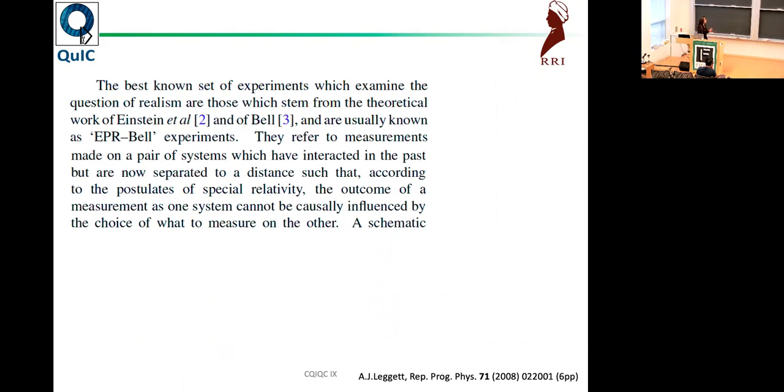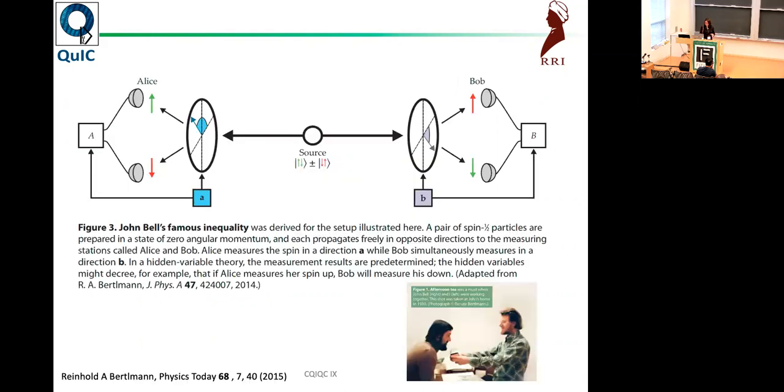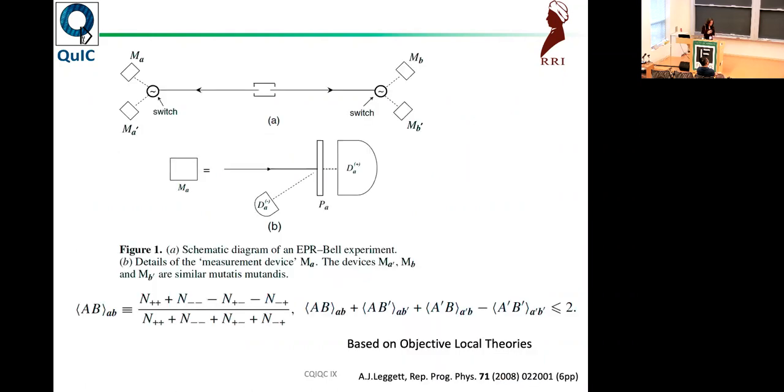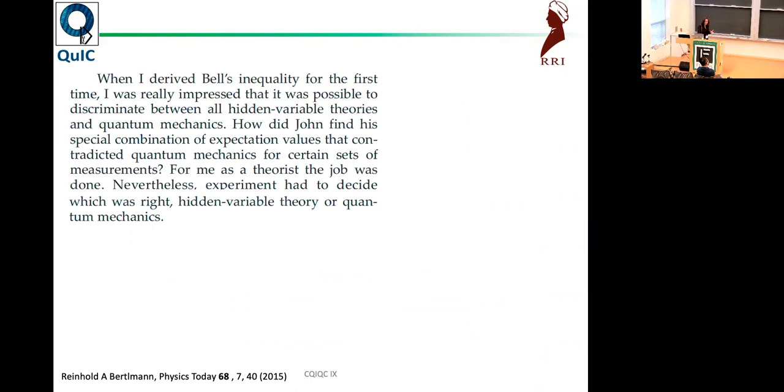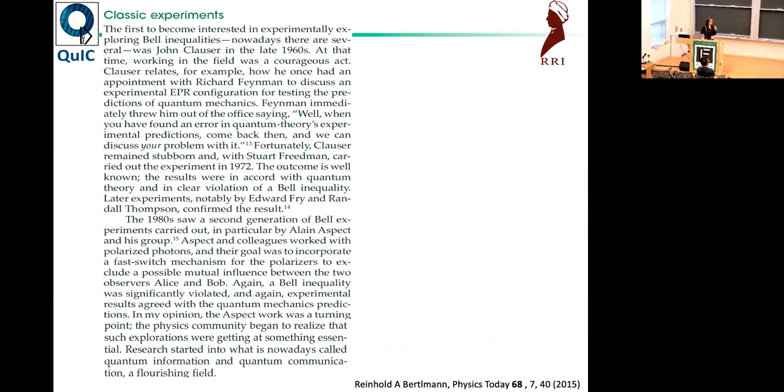This is Reinhold Bertelman with his socks. The best known set of experiments which have tried to examine this question of realism are, of course, these EPR Bell experiments. We have a source. For me, it's a pair of photons, but it could be anything. They are going to these different measurement stations, and measurements are happening simultaneously. If you use objective local theories, which is, for instance, local realism, then you will end up with this inequality, which is called the Bell inequality. When Bertelman derived Bell's inequality, he was very impressed by it, and he was also very impressed that John Bell could do this. But of course, for a theorist, the job was always done.